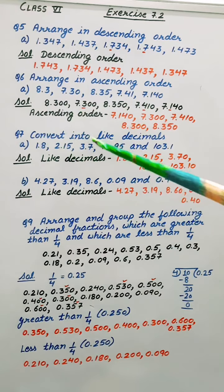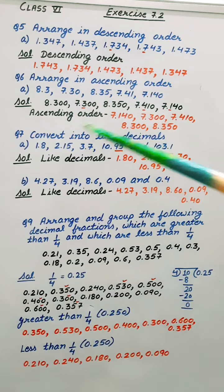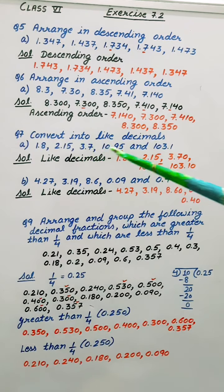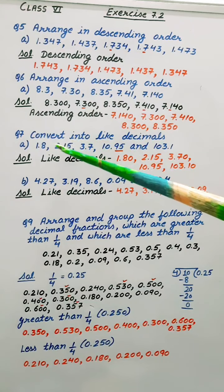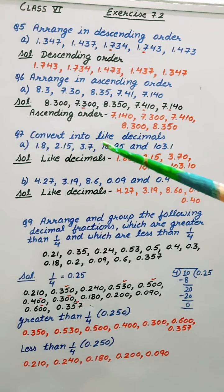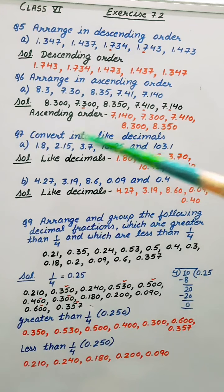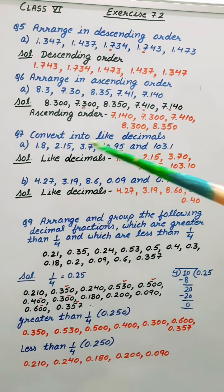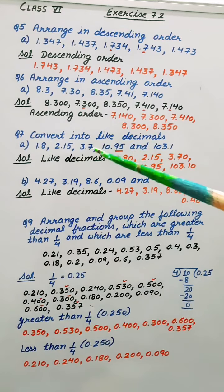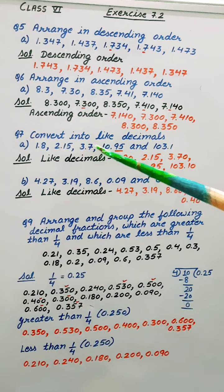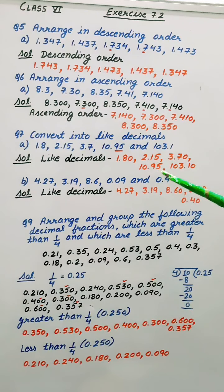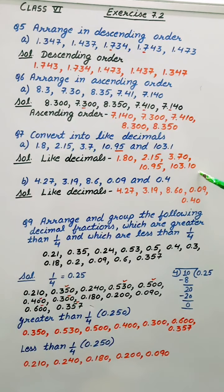Next question: Convert into like decimals. So here we can see maximum number of digits after the decimal. They are 2. So everywhere we will try to make these digits 2. So 1.8 will change into 1.80. This will remain same. They are here also. Number of digits after the decimal. 1.0 will be there. 10.95 as it is. 103.10.